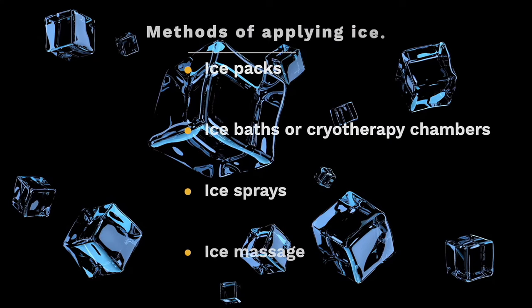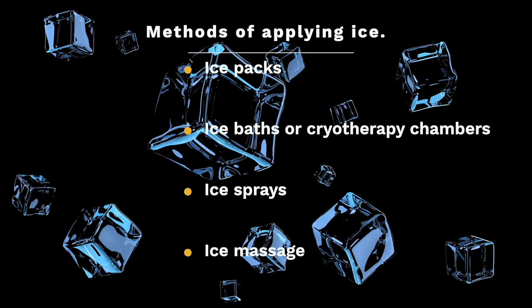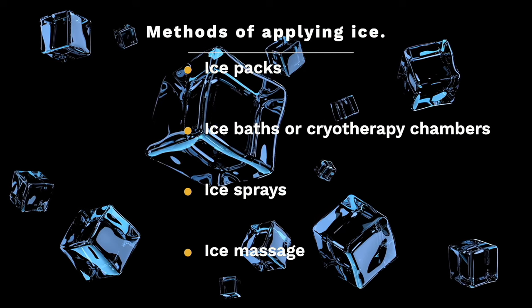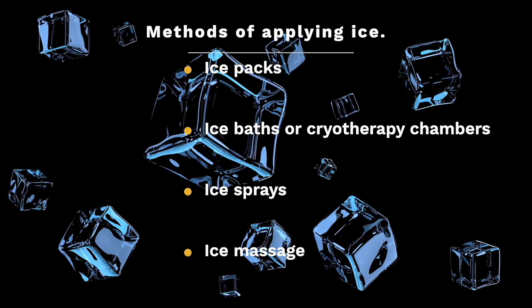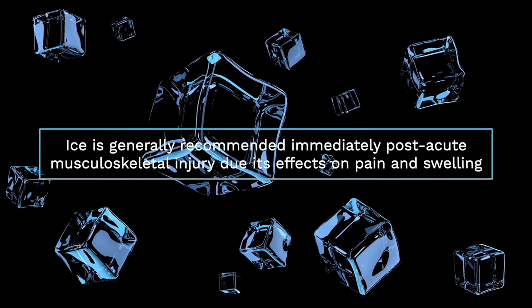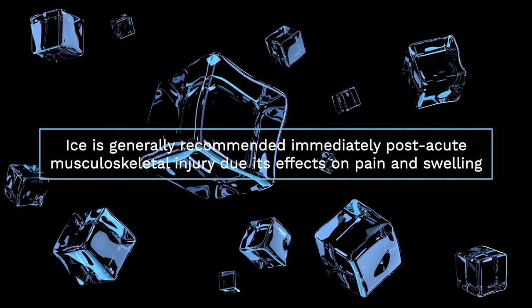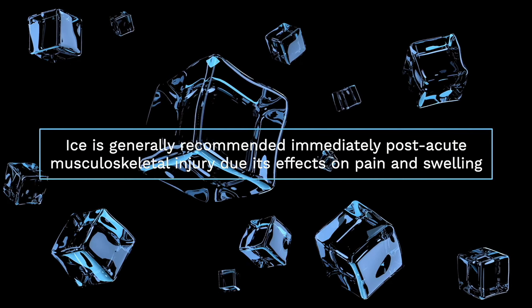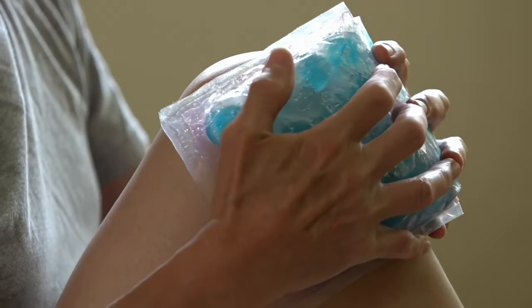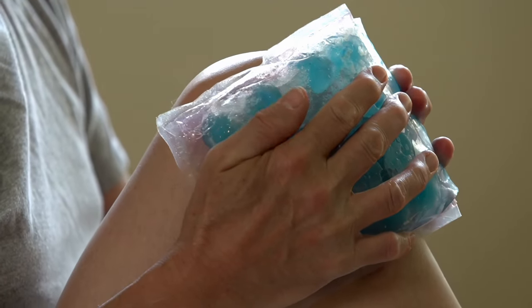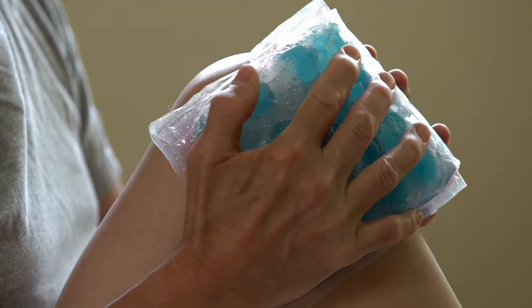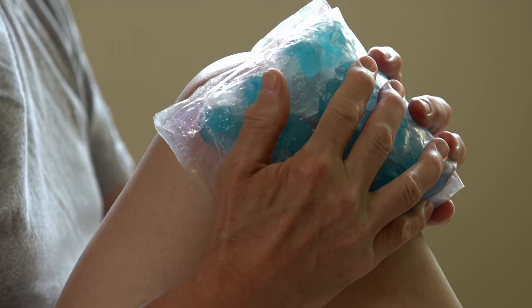The ways you can use ice as a therapeutic modality vary. For example, ice can be applied using ice packs, baths, sprays, and massage. Regardless of the method of application, ice is generally recommended immediately post-acute musculoskeletal injury due to its effects on pain and swelling. The most common method of using ice therapeutically is with ice packs, which can be made easily using crushed ice and water in a plastic bag applied directly to the skin.